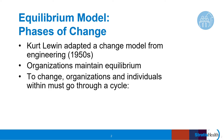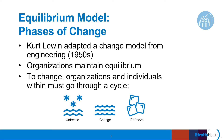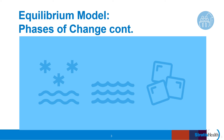In order to change, he proposed that organizations must go through a three-step cycle: unfreeze, change, then refreeze. The unfreeze, change, refreeze steps represent the beginning, middle, and end of how individuals and organizations undergo the change process.